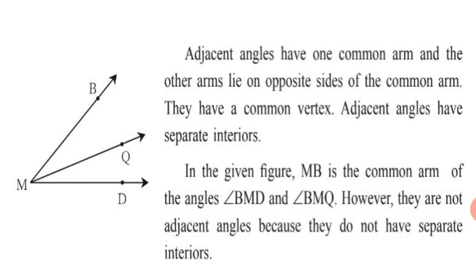Adjacent angles have one common arm, and the other arms lie on the opposite sides of the common arm. Ray MB and Ray MD are the other arms of the two angles, which lie on the opposite side of the common arm MQ. They have a common vertex M. Adjacent angles have separate interiors — for example, you can paint Angle BMQ blue and Angle QMD red to see their different interiors.